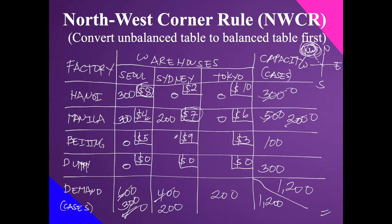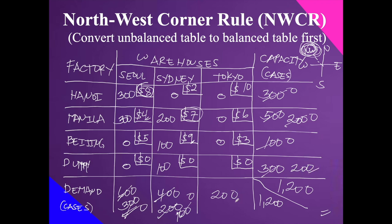Next northwest cell is Beijing to Sydney, cost $9. Beijing has 100 capacity and Sydney still needs 200. We allocate 100 from Beijing. Beijing is exhausted, and Sydney's remaining demand is 200 minus 100 = 100. Next northwest cell is Dummy to Sydney, cost $0. Dummy has 300 capacity and Sydney needs 100. We allocate 100 from Dummy. Sydney is satisfied, and Dummy has 300 minus 100 = 200 remaining. Finally, Dummy to Tokyo: allocate 200. Both Dummy and Tokyo are now satisfied — the table is complete and balanced.